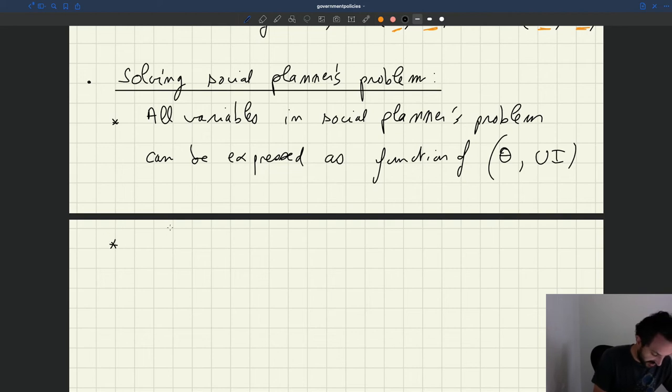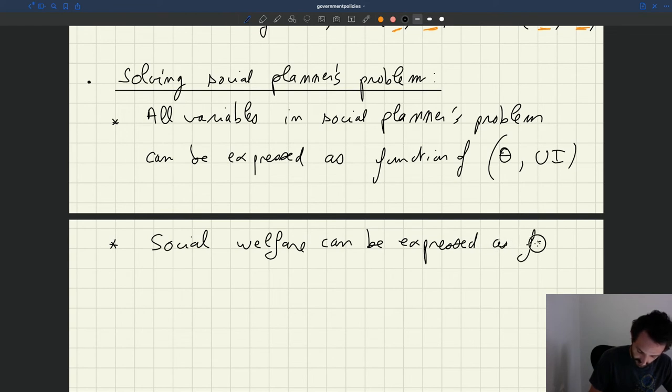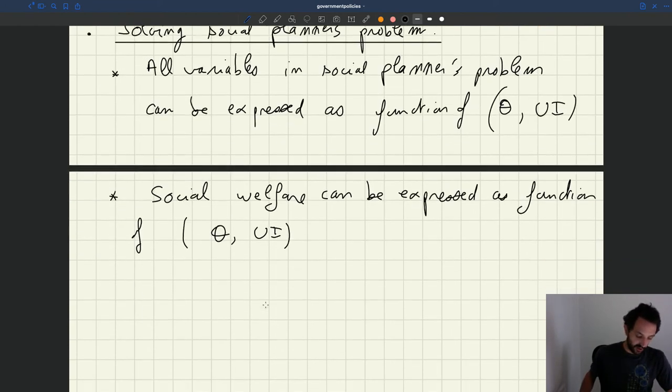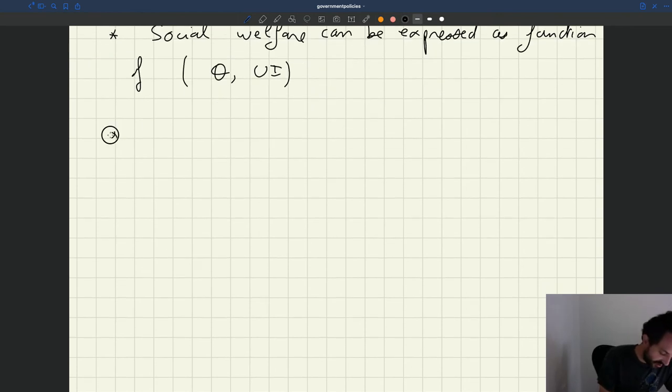Therefore it means that the social welfare, which we introduced there, can also be expressed as a function of theta and UI. And so then what that means is that you can rewrite the social planner's problem as follows.